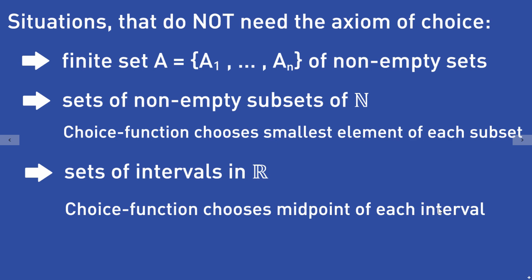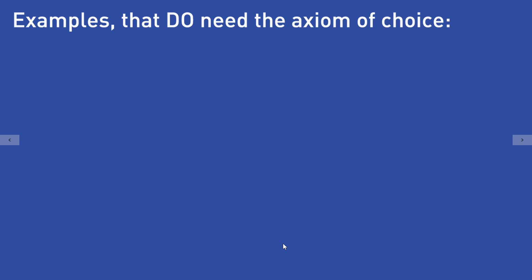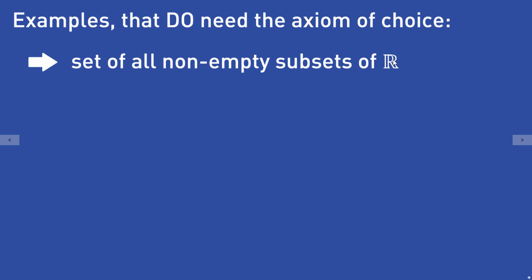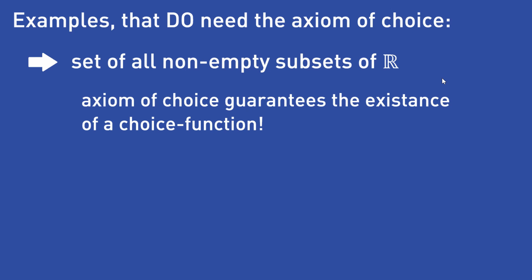An example where the axiom of choice is needed is the following. If you consider the set of all non-empty subsets of the real numbers, a choice function cannot be written down explicitly. You need the axiom of choice, which postulates its existence.